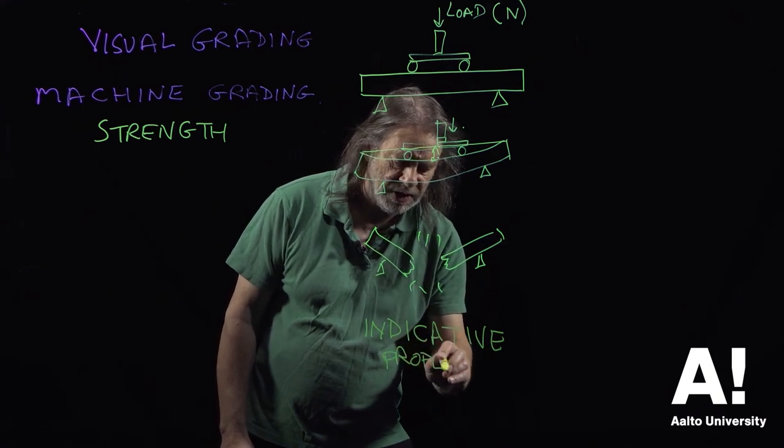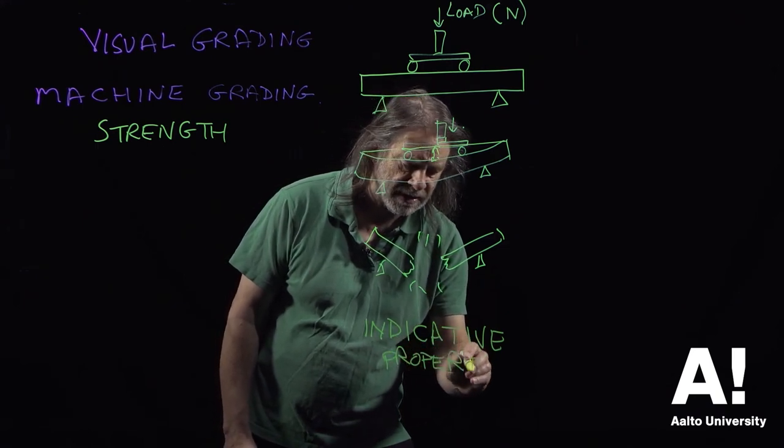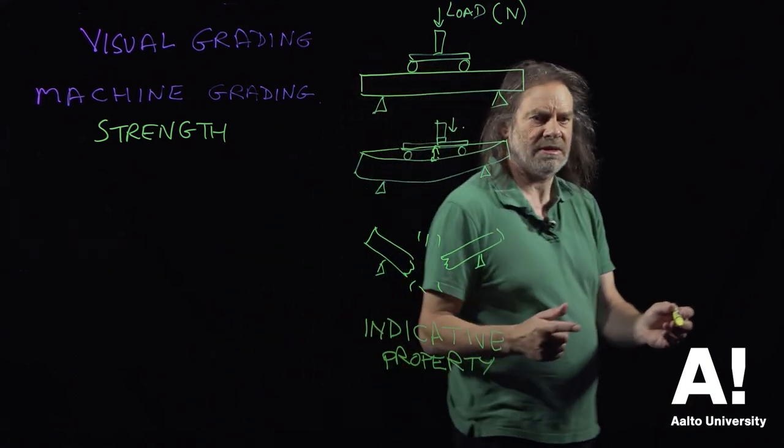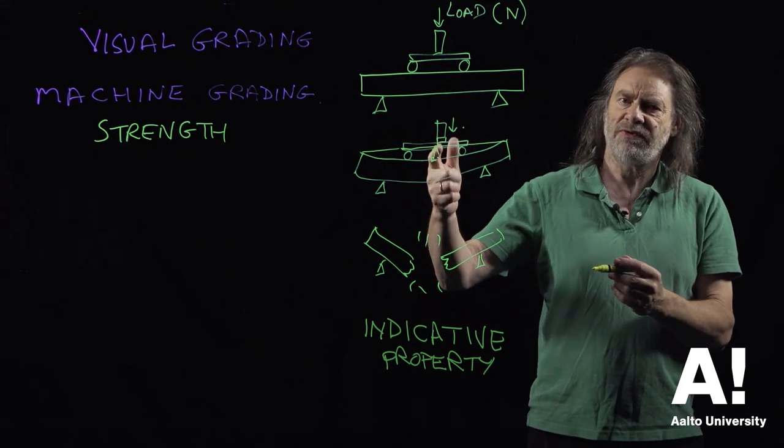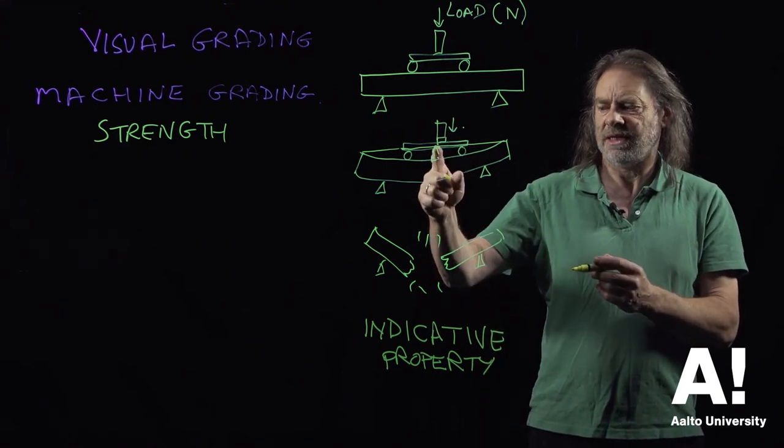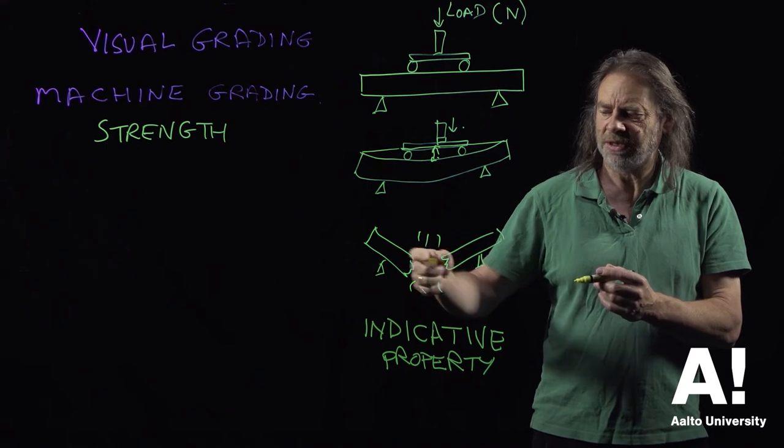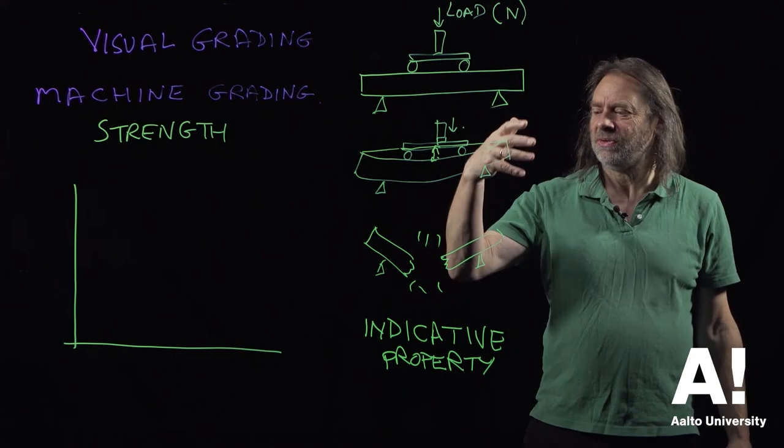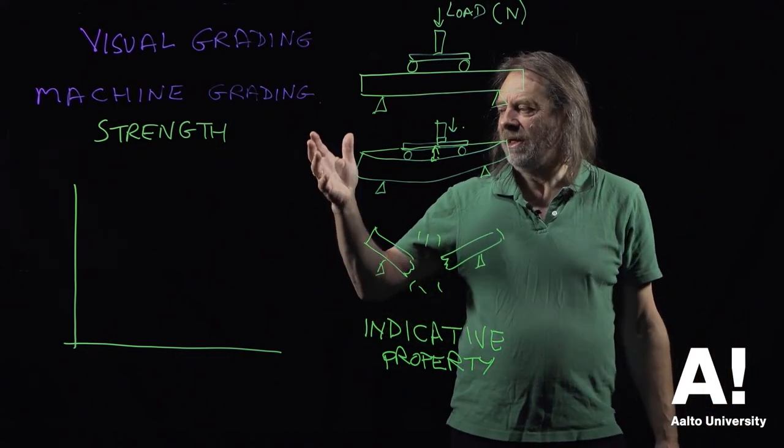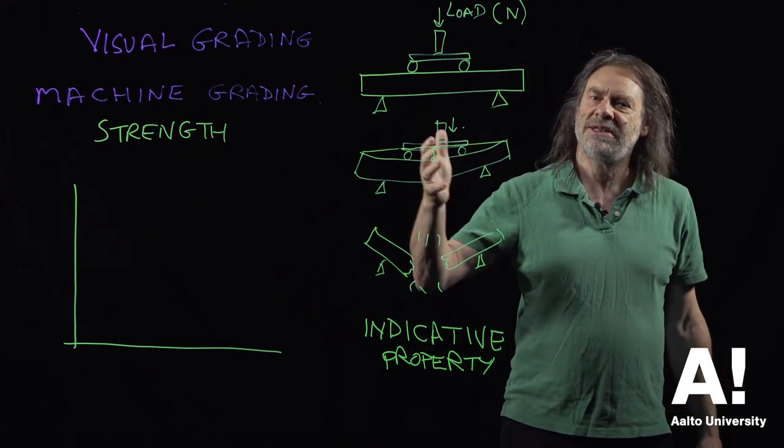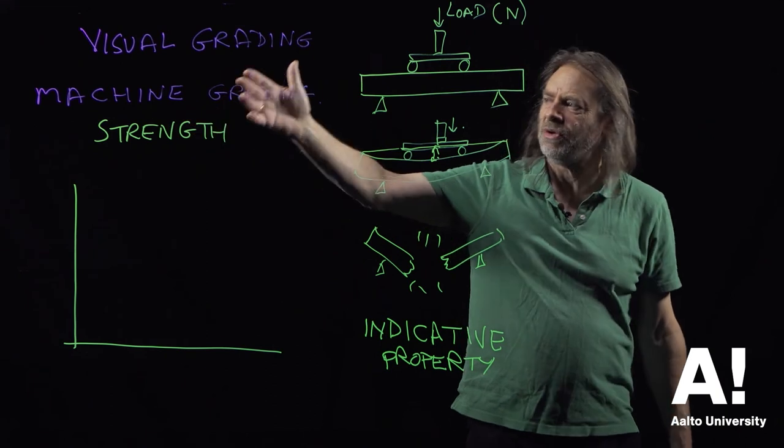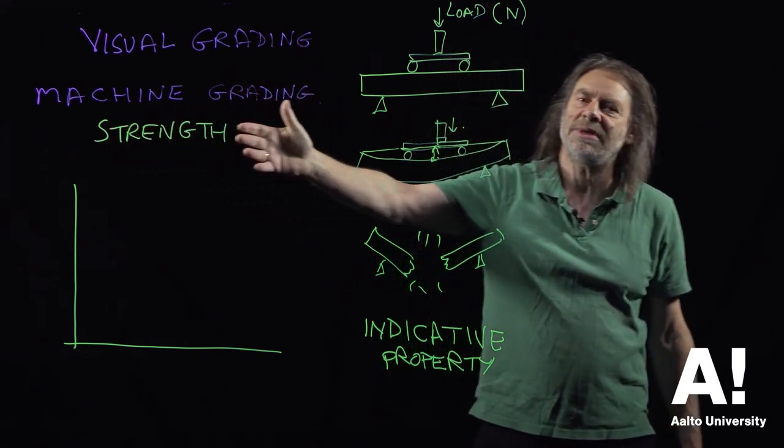Because whatever it is we're measuring indicates the property that we want to know. So we might be measuring the deflection, the stiffness, and that, we hope, would be related to the strength. We want to measure an indicative property and see if it has some sort of relationship to the thing that we're interested in, which is how strong that material is.